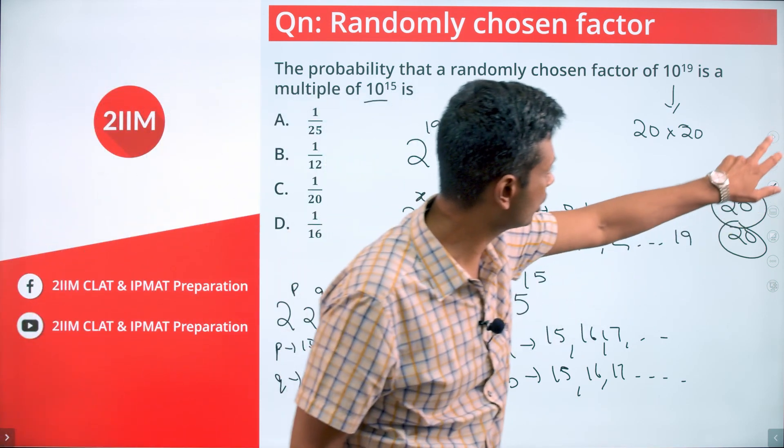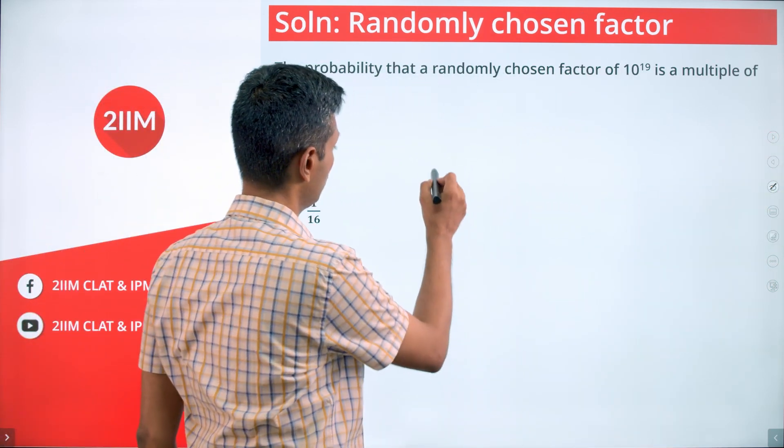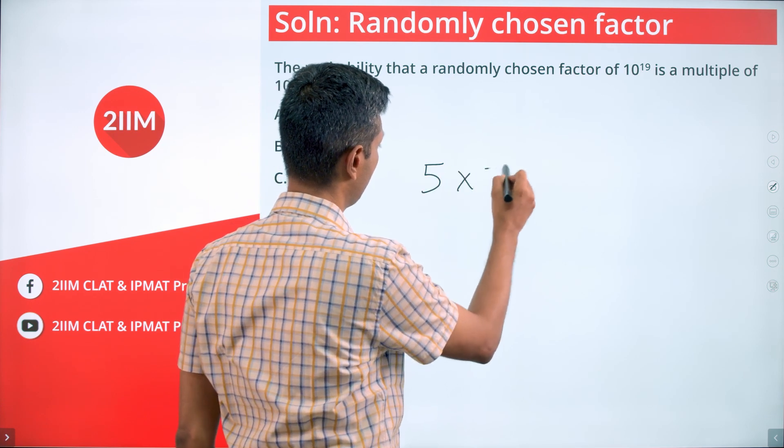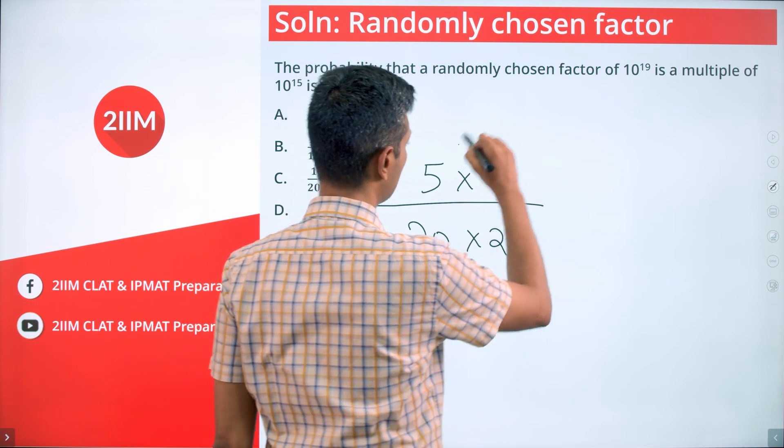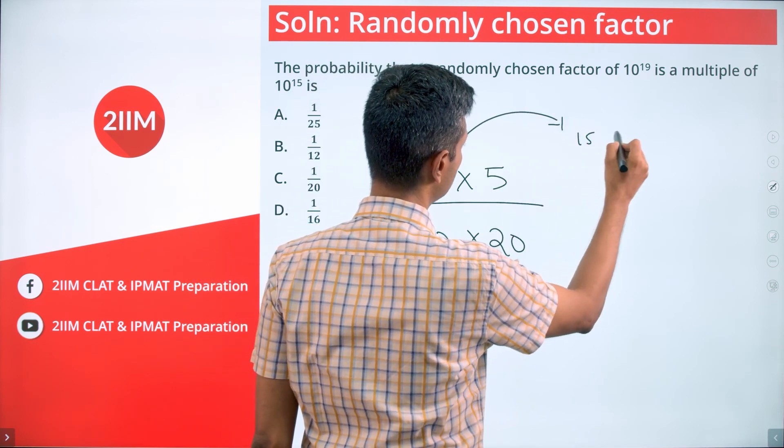the probability we are looking for is 5 times 5 by 20 times 20. Here, the powers take values 15, 16, 17, 18, 19.